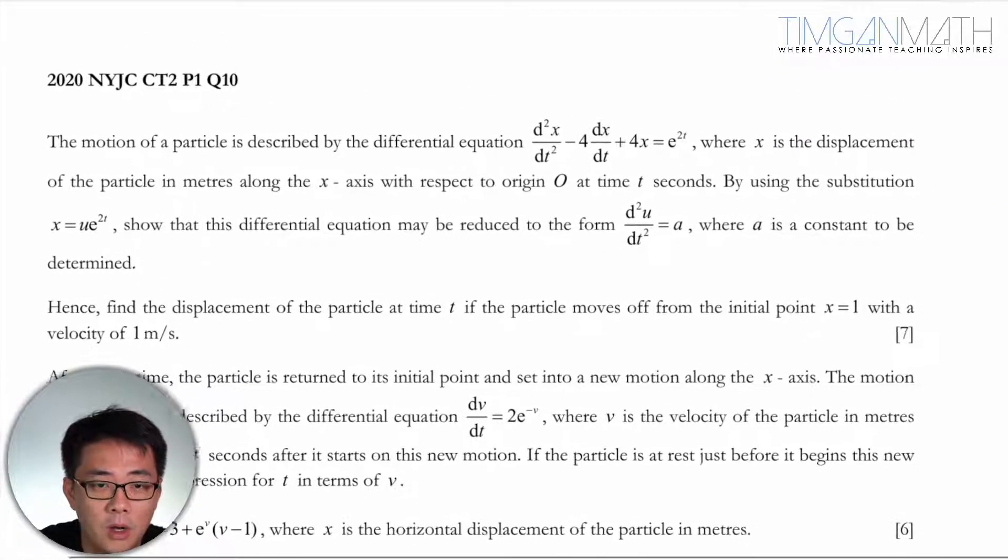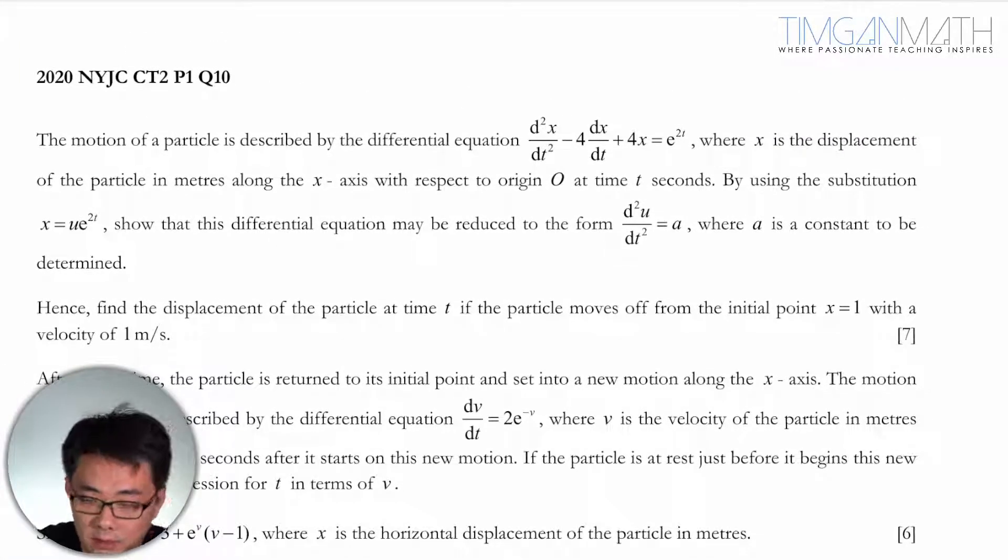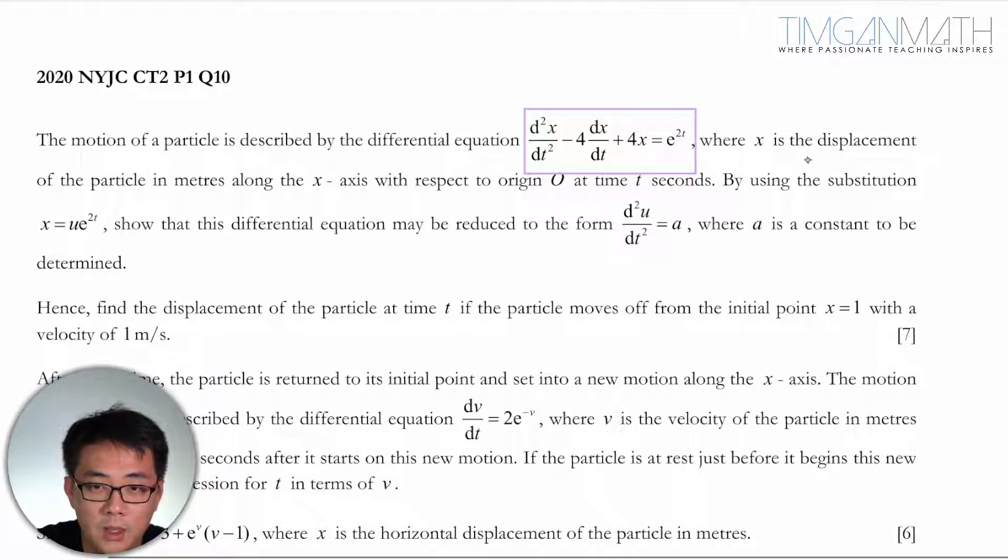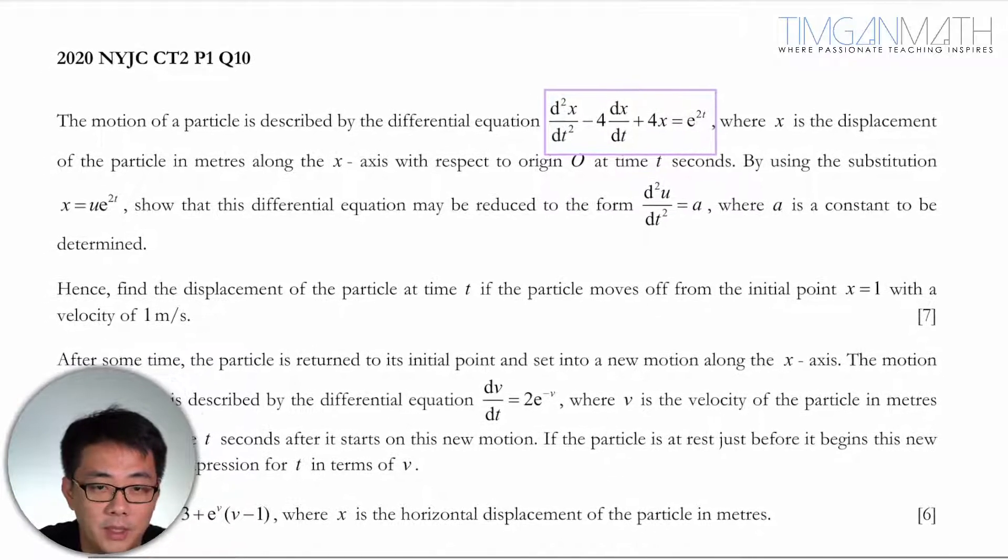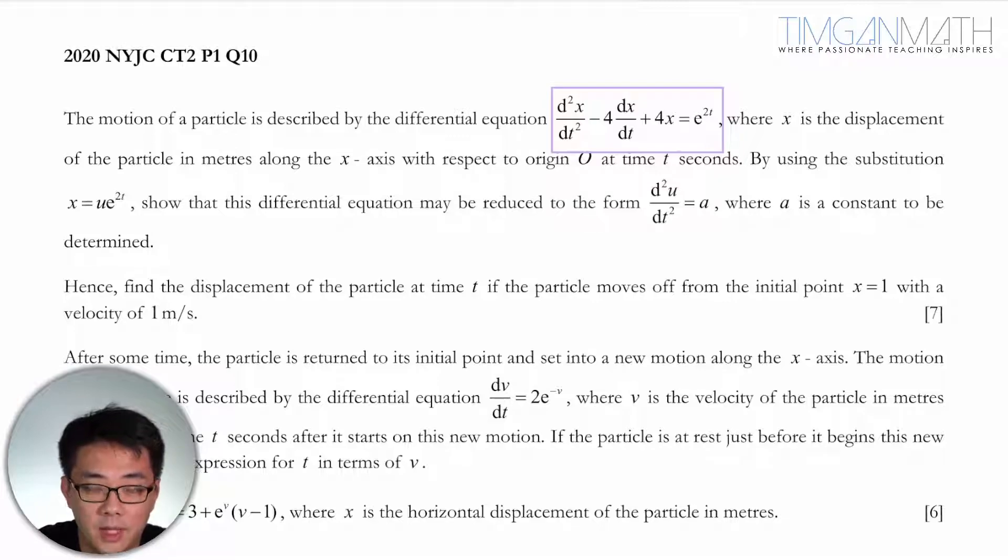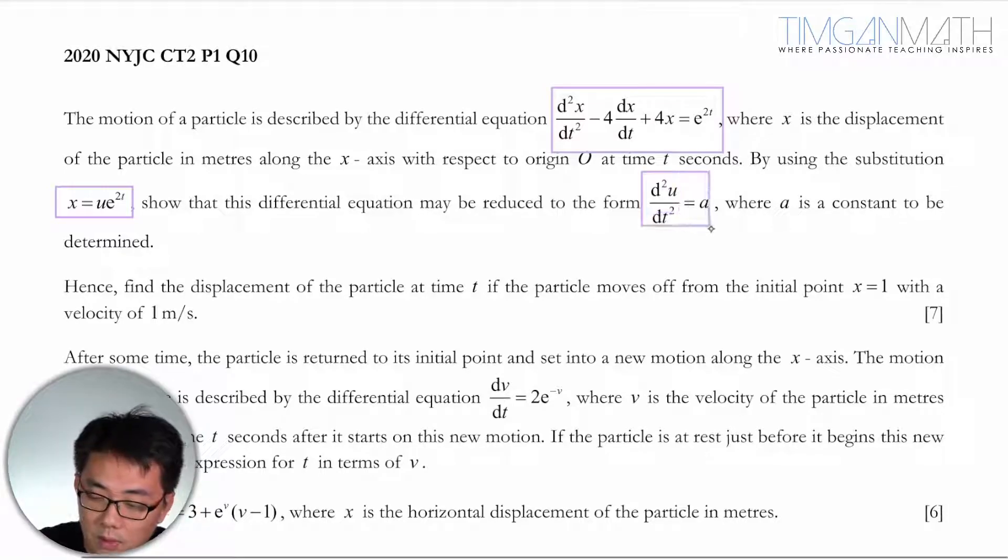The motion of a particle is described by this differential equation, which is the governing equation for the acceleration and speed. X is the displacement of the particle in meters. By using the substitution x = ue^t, the differential equation may be reduced to d²u/dt² = a, where a is a constant to be determined.